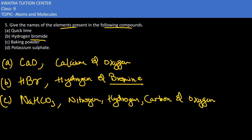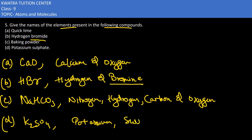So these 4 components represent part C. In part D we have potassium sulfate, which is K₂SO₄. So we would have potassium, sulfur, and oxygen. These are the elements present in the four given compounds. Thank you.